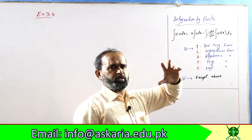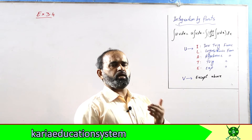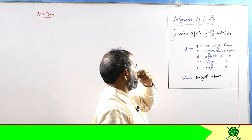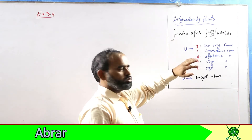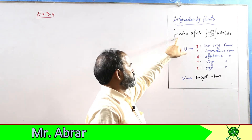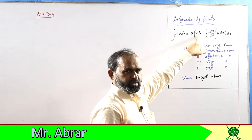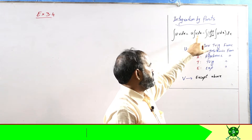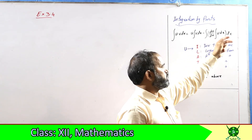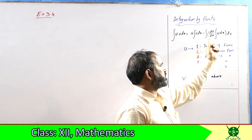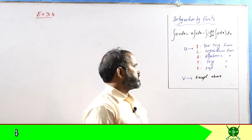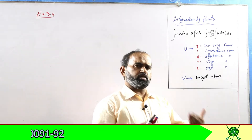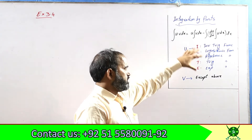Normally hum woh function u lete hain jis ki integration akele possible nahi hoti — kuch cases mein, saare cases mein nahi. Aur v woh function hota hai jis ki integration possible hoti hai. Formula yeh hai: u as it is, integration of v, minus derivative of u times same integration of v, aur phir us saare ka integration karna hai.